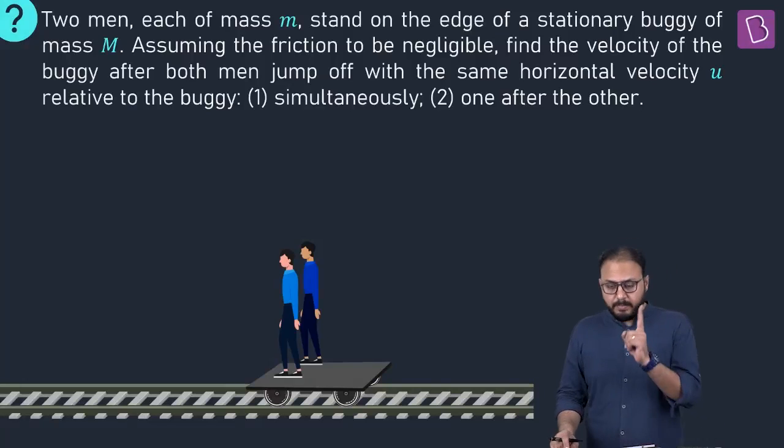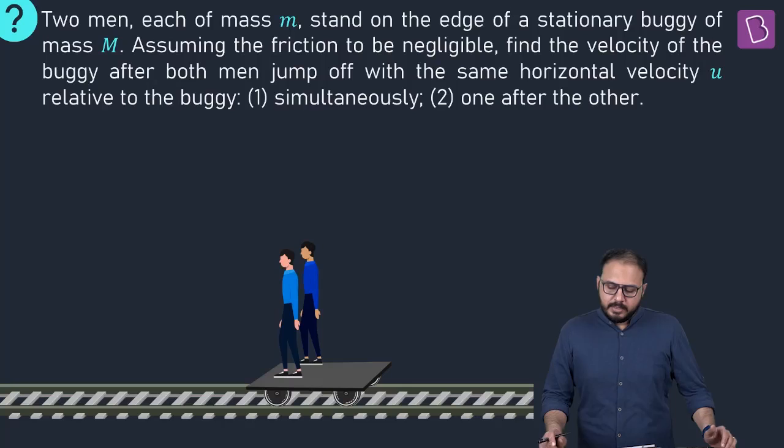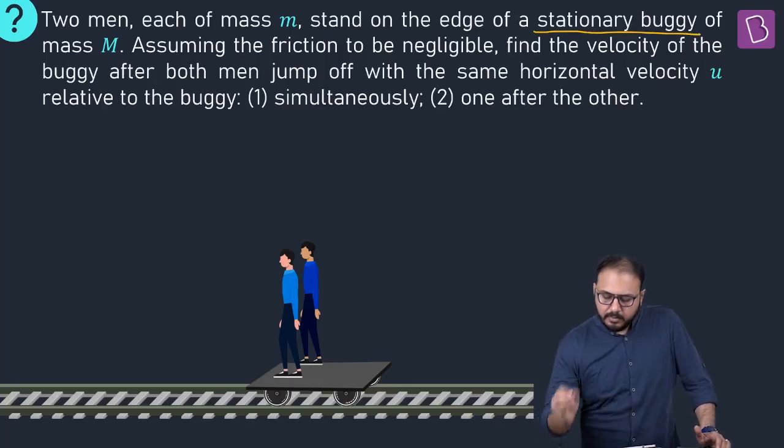Two men, one buggy. One buggy, two people. What's the mass of the buggy? Capital M. What's the masses of the men? Small m, small m. Two people. Stationary buggy. The buggy is stationary.